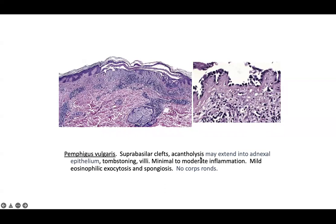In contrast to Hailey-Hailey where you get diffuse acantholysis, in pemphigus vulgaris it usually extends into the adnexal epithelium — it's so vulgar it even affects the hair follicles, whereas Hailey-Hailey spares the adnexal epithelium in classic cases. Pemphigus vulgaris will show an intraepidermal network on DIF with IgG targeting desmoglein 3, located in the lower epidermis. You can see mild to moderate inflammation with mild eosinophilic exocytosis and spongiosis.